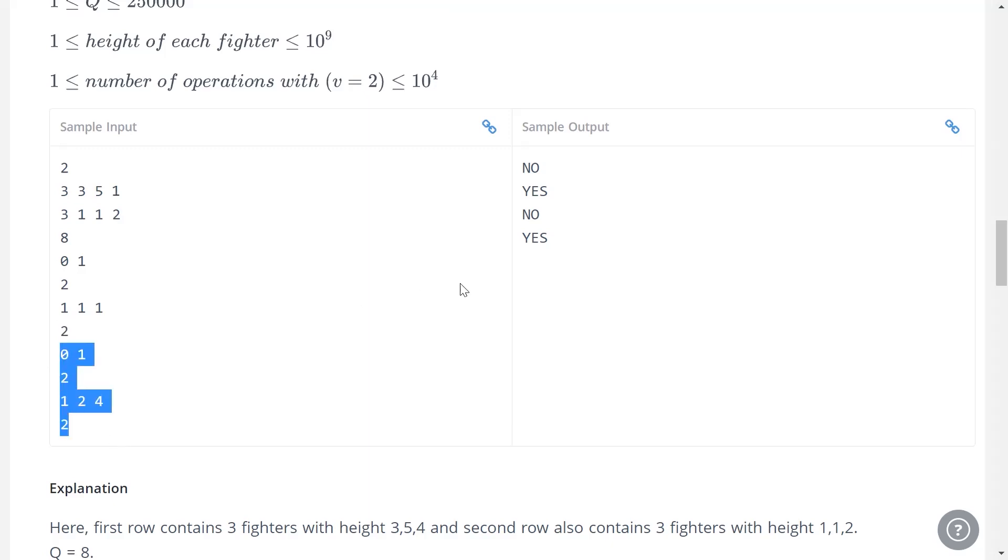Now, if you have a look at the other four queries, you'll be able to extrapolate why no and yes are the outputs.